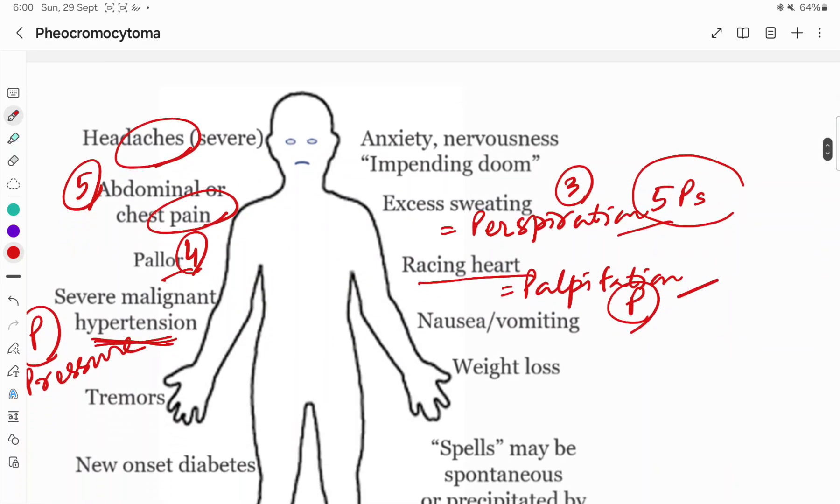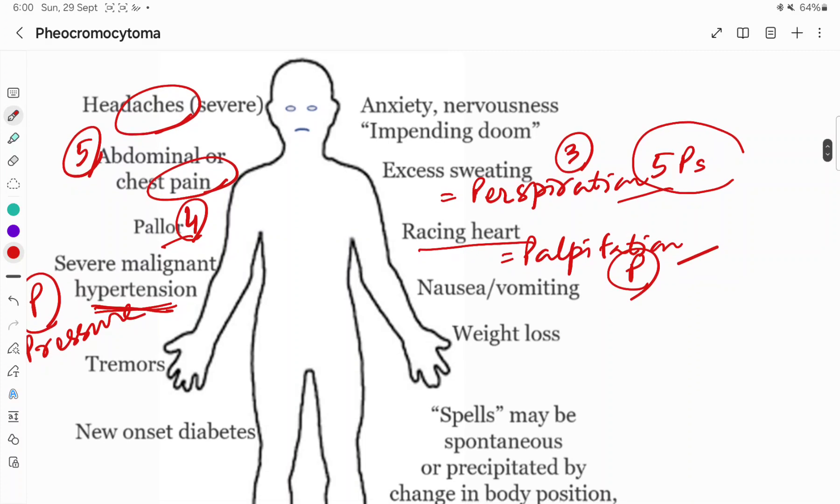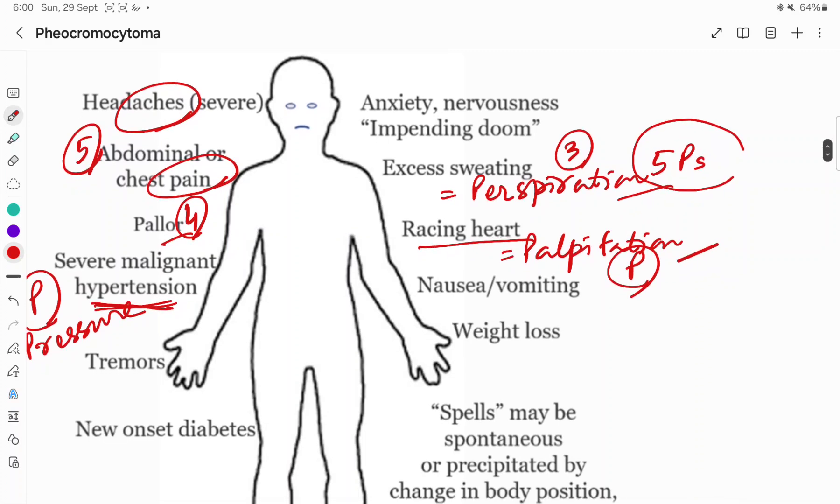If we go to the symptoms of Pheochromocytoma, we can say that five P's are there. One P for blood pressure or pressure, hypertension. Second for palpitations, increase in heart rate. Third for perspiration.